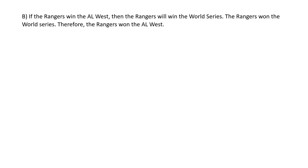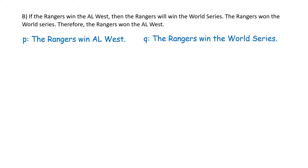Part B: if the Rangers win the AL West, then the Rangers will win the World Series. The Rangers won the World Series, therefore the Rangers won AL West. Let P be 'the Rangers win the AL West' and Q be 'Rangers will win the World Series.' Symbolically: P → Q; the Rangers won the World Series is Q; and the conclusion, the Rangers won AL West, is P.